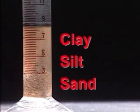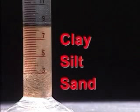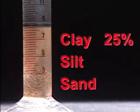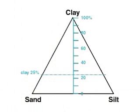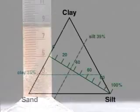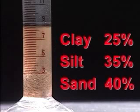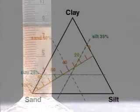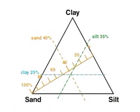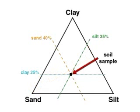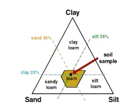The volume proportions of sand, silt, and clay can be determined using the marks on the graduated cylinder. This particular sample is 25% clay, 35% silt, and 40% sand. The data for our soil sample indicates that it is a loam.